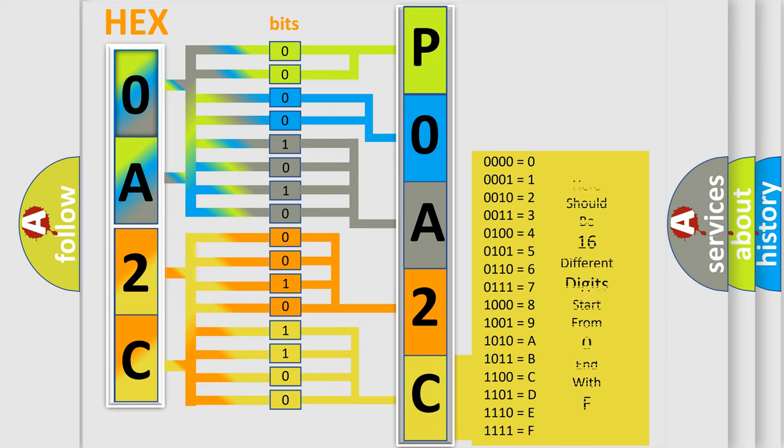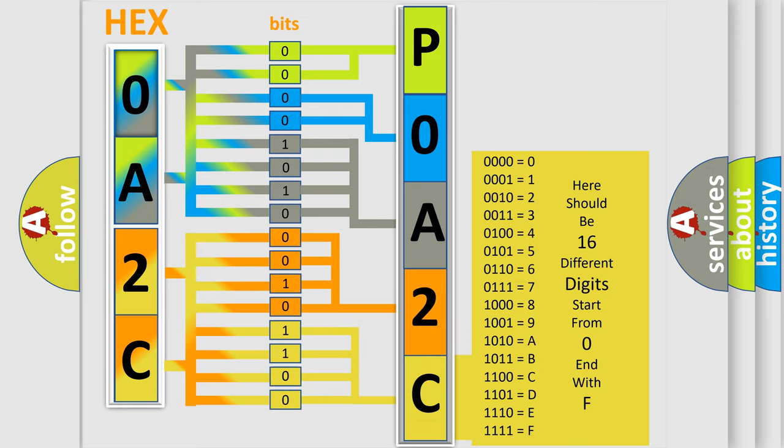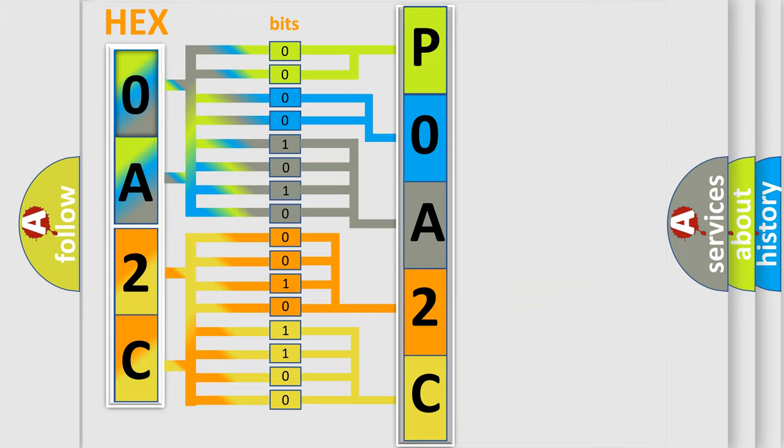So, what does the diagnostic trouble code P0A2C:47 interpret specifically for Nissan car manufacturers?